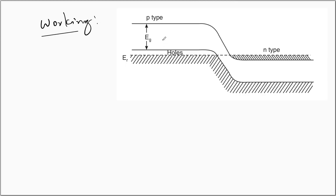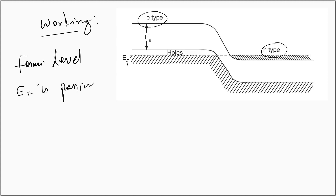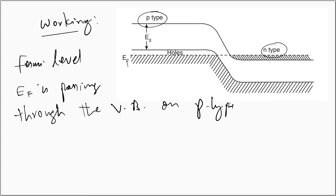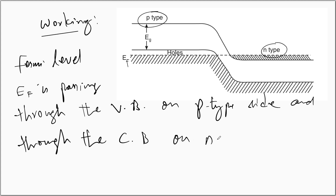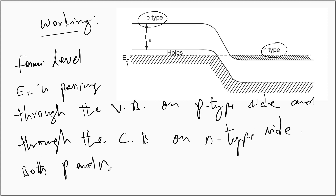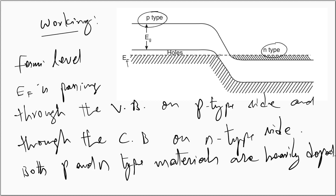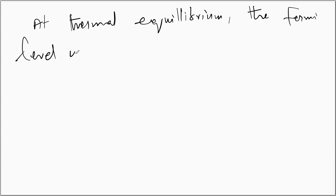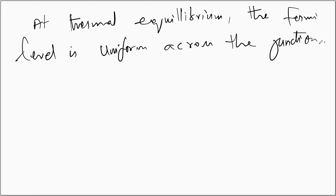The energy band diagram of the unbiased homo junction diode shows the Fermi energy level as a dashed line. The Fermi level on the P-side is in the valence band, and on the N-type side it is in the conduction band — because both P and N are heavily doped. This scenario is observed under thermal equilibrium conditions, where the Fermi level is uniform across the junction.